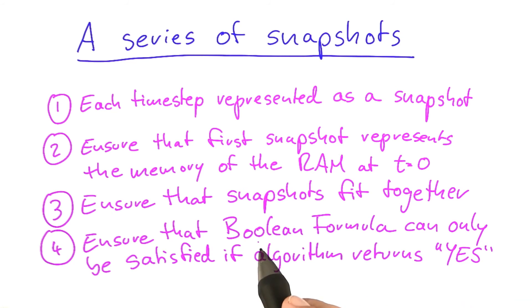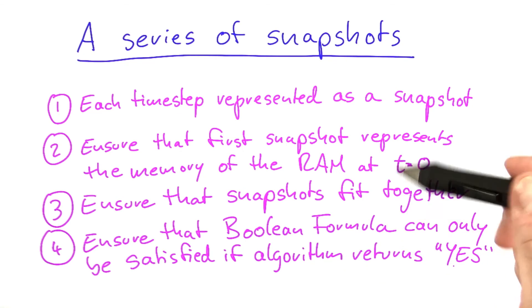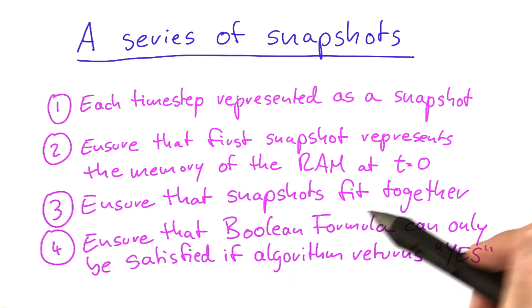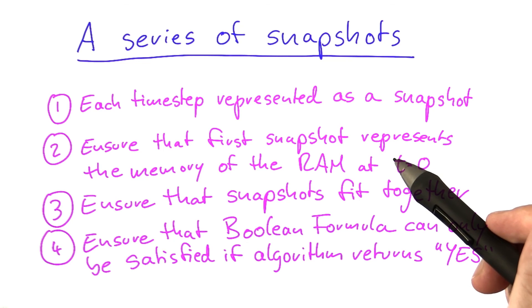And then, finally, we have to ensure that the Boolean formula that we're building as an input to SAT can only be satisfied if the algorithm returns yes at some point in time. Otherwise, because we have a decision problem, if the algorithm returns no, we do not want the Boolean formula to be satisfiable.